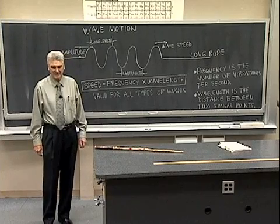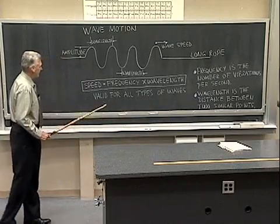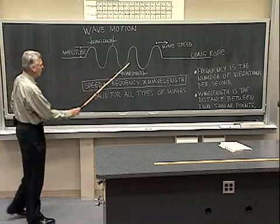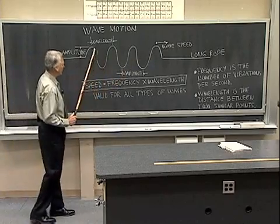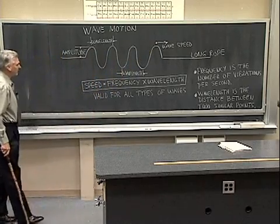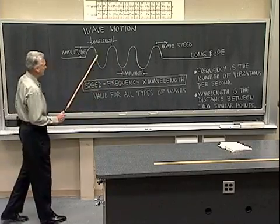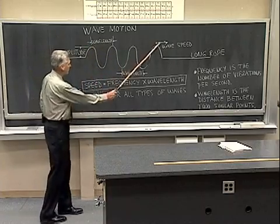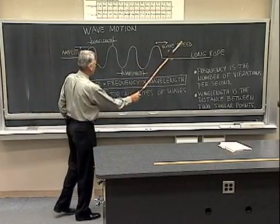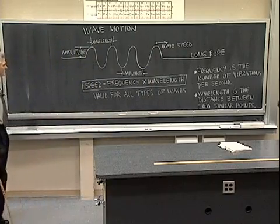I'm going to discuss and demonstrate wave motion. Here I have a diagram of a long rope with some waves traveling along it. The wave speed is how fast the wave travels along the rope. I've designated a little vector here showing the wave speed — that's how fast it travels.